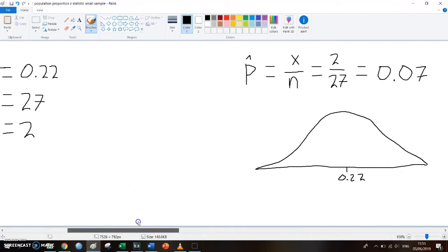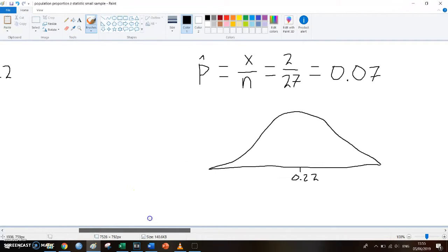Well, to make this a bit easier, I've drawn out a normal curve. There's no need to do so for this hypothesis test, but it is just to make it a bit more visually clear. This is a normal distribution curve and the mean, so the population proportion 0.22, is in the middle.